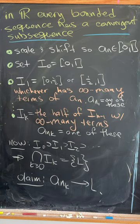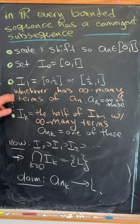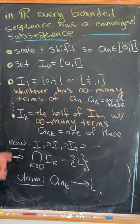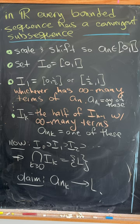0 to 1. Then we'll set I sub 0 equal to the interval [0,1], and then we'll take I sub 1 equal to half of that interval, depending on which half has infinitely many terms of our sequence.